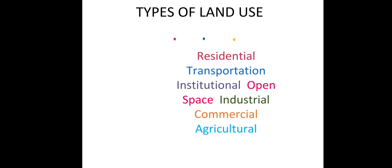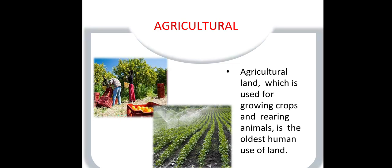There are some important types of land use: number one is residential, number two transportation, number three institutional, number four open space, number five industrial, number six commercial, and finally agriculture. Agriculture land use, which is land for growing crops and rearing animals, is the oldest human use of land.